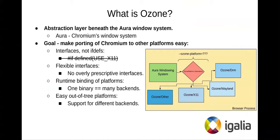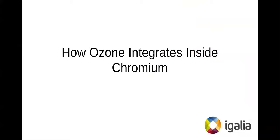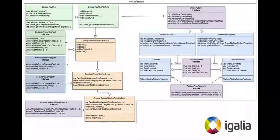Another advantage of Ozone is that it eases downstream development. Not all backends end up upstream, and the goal is to make life of downstream maintainers as easy as possible. With Ozone one can plug in their own backend — for example GTK, Qt, or whatever — and use it without fear of rebasing. So given that you are now familiar with what Ozone is, let's speak about the design of Ozone, how it integrates with Aura, and how Ozone Wayland is designed.